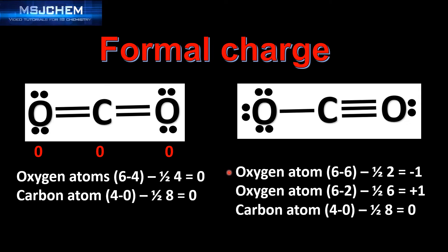Next we'll do the Lewis structure on the right, starting with the oxygen atom on the left. We have six valence electrons minus six non-bonding electrons minus half of two — the number of electrons in a single bond — giving a formal charge of negative one. For the oxygen atom on the right: six valence electrons minus two non-bonding electrons minus half of six, because there are six shared electrons in a triple bond, giving a formal charge of plus one.